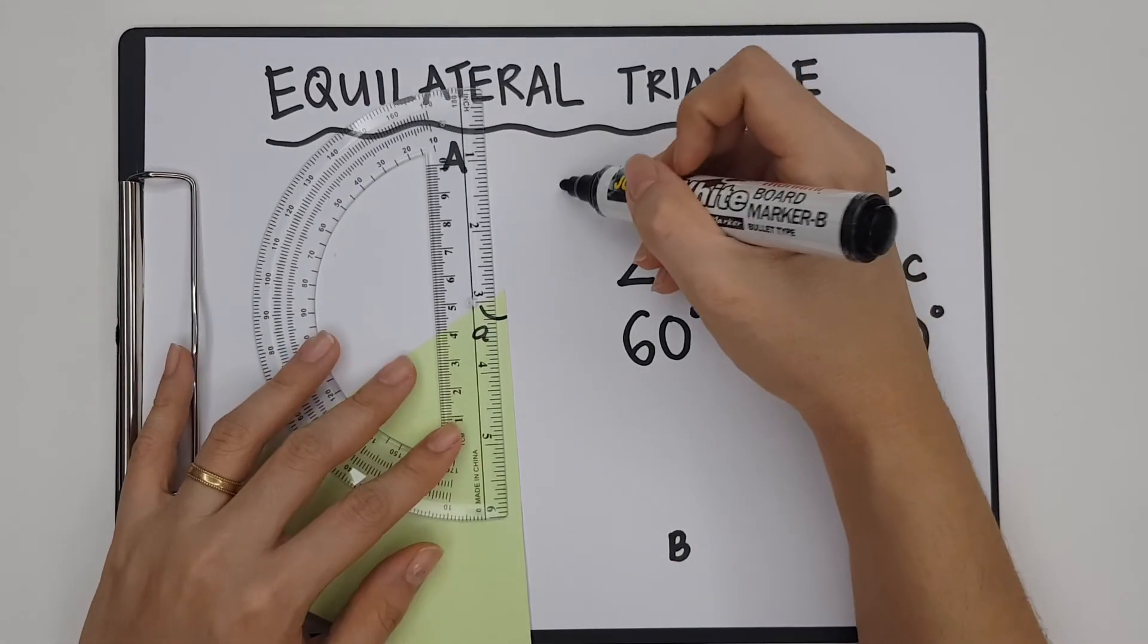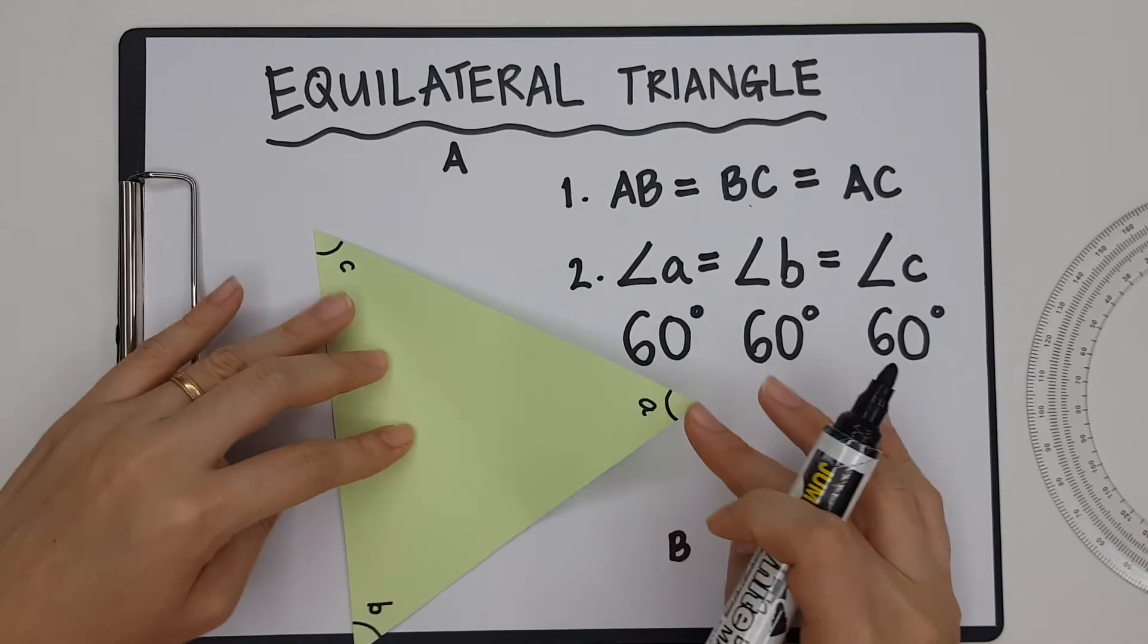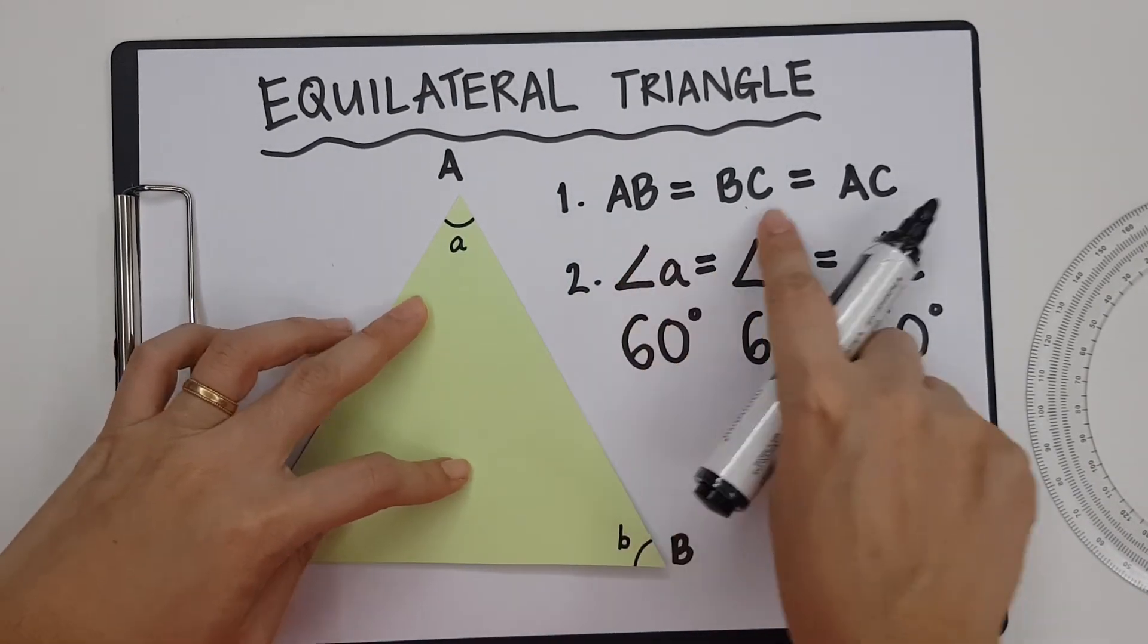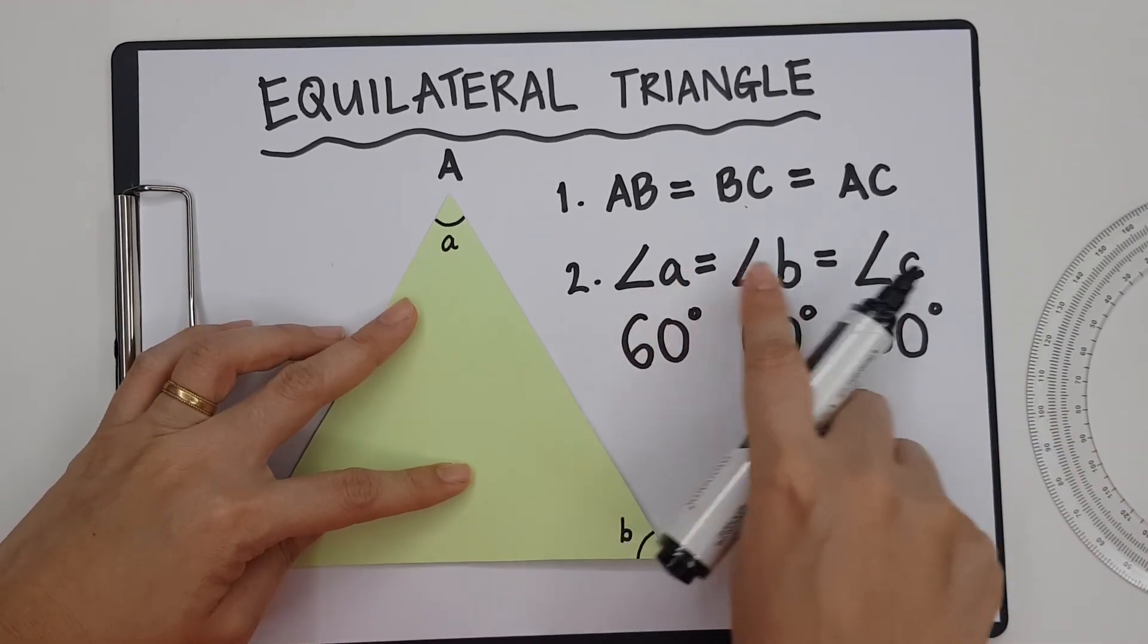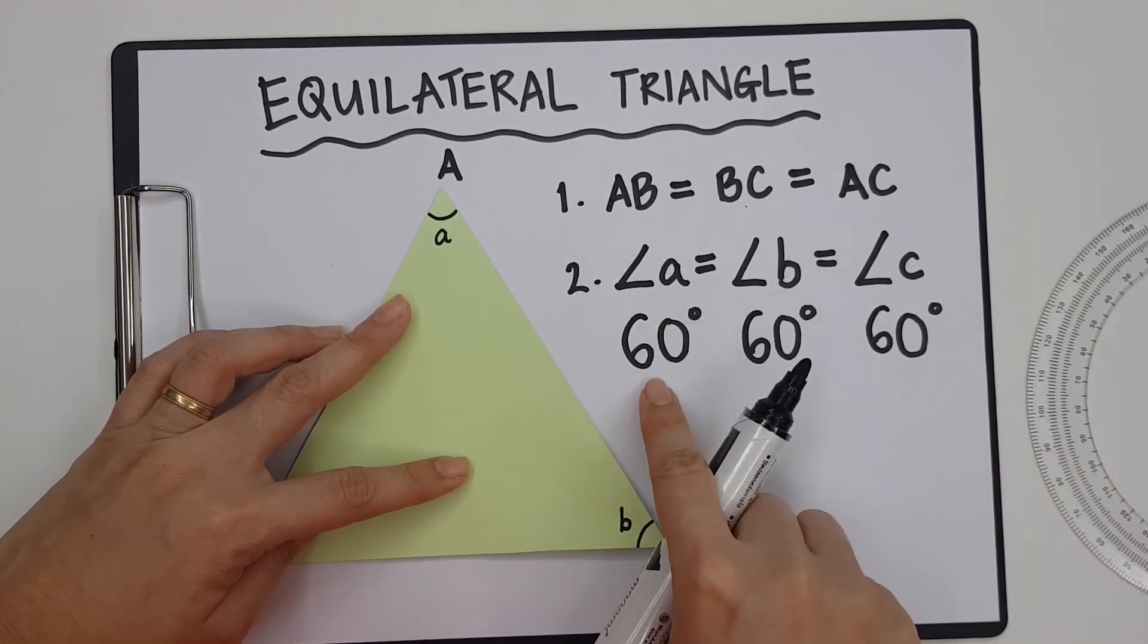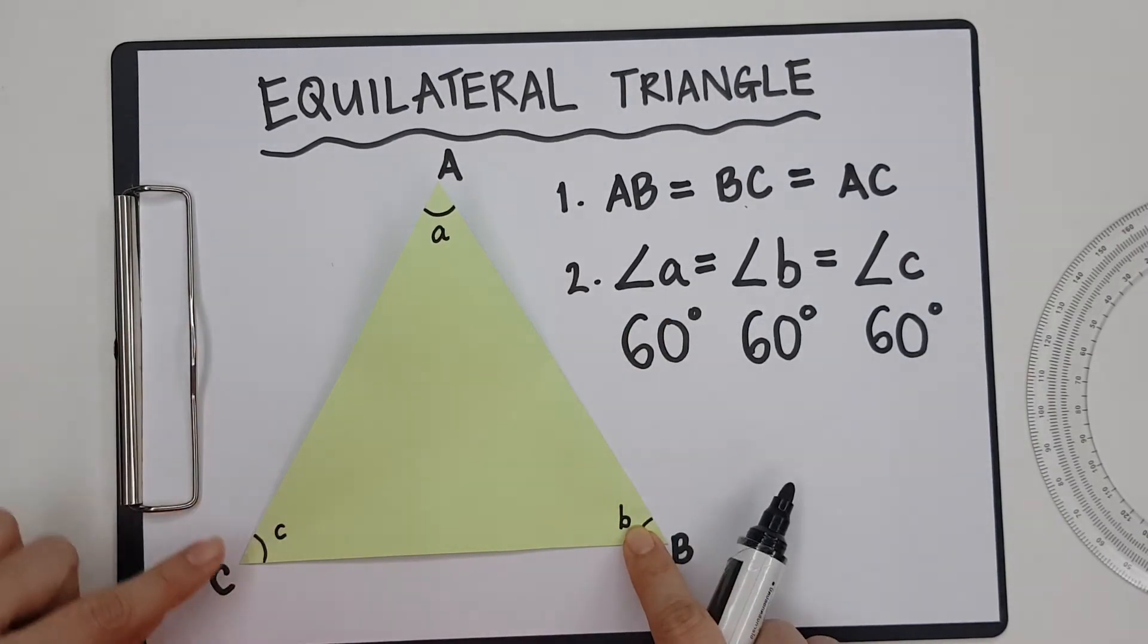And so angle A would be also 60 degrees. So basically, it's just two properties. First property being, all the sides of an equilateral triangle are equal. And all the angles are equal. And not only are they equal, they are equal to 60 degrees.